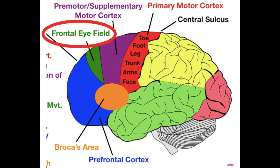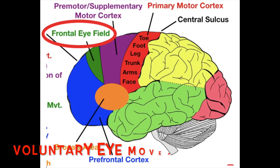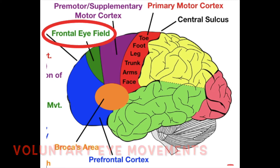The frontal eye field deals with voluntary eye movements — your saccades — the ability to look left, right, up, and down.